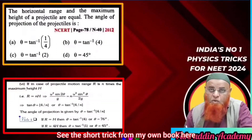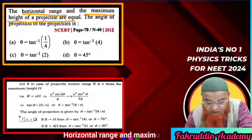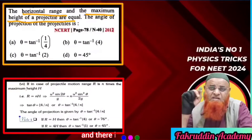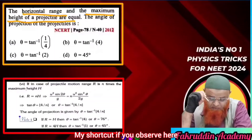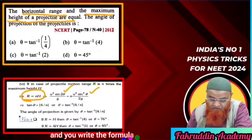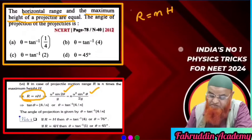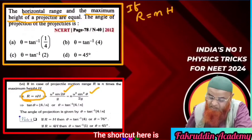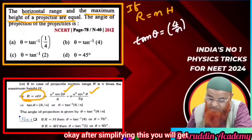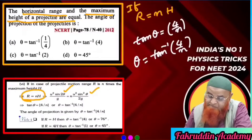See the short trick from my own book. In this question, it is said that horizontal range and maximum height of a projectile are the same. There is a shortcut: if range is n times the height, you write the formula for range and height and simplify. At last you get: tan θ = 4/n. After simplifying, theta = tan⁻¹(4/n).